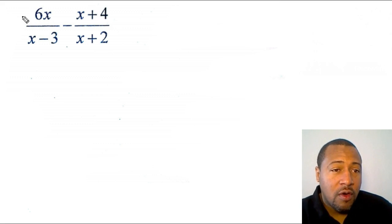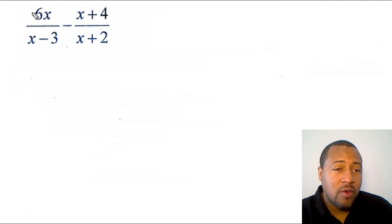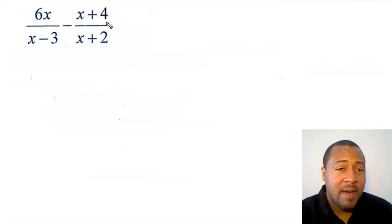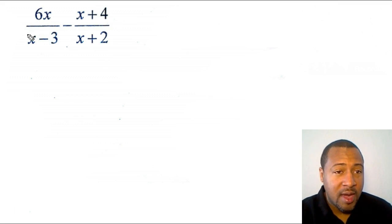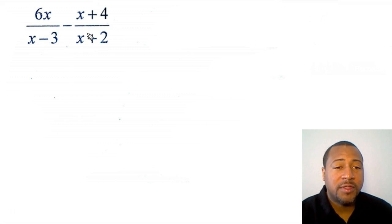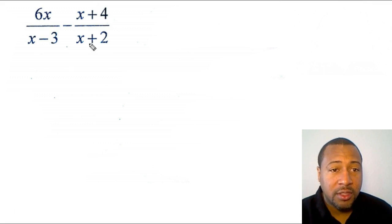To start this, I have to cross multiply my 6x and my (x + 2), then I would multiply (x + 4) times (x − 3), and then I would also multiply (x − 3) times (x + 2) for the denominator.